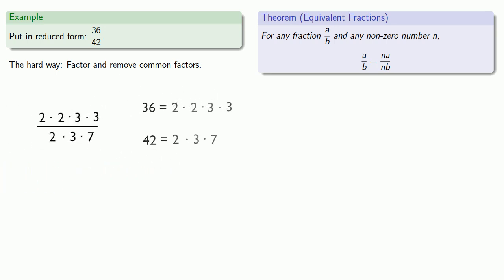Equals means replaceable, so we can replace 36 and 42 with their factored forms. And now we'll remove common factors. So the 2 is in numerator and denominator, so we'll remove that factor. The 3 is a common factor. It's in numerator and denominator, so we'll remove that common factor. And there are no more common factors, so we have our reduced form, 2 times 3 over 7.